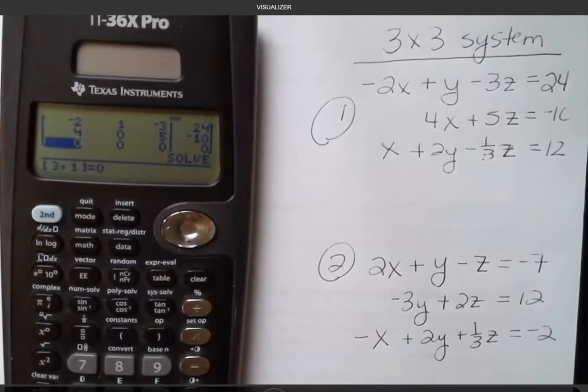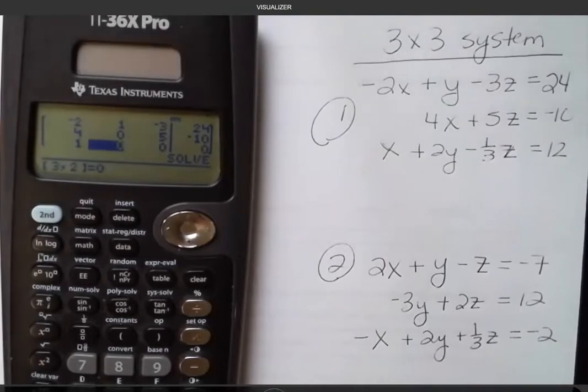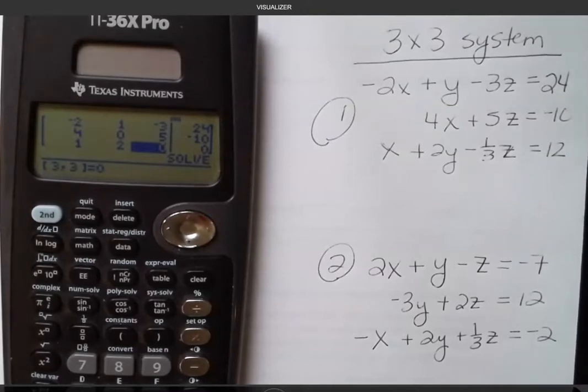And finally we have 1 for the x. We don't see a value there - our coefficient is 1. We're just entering coefficients here, so it kind of makes it nice. And then our z was negative 1/3. We always want to make sure that we're entering that negative if there is one. And so I'm going to enter that as negative 1/3, and then that equals 12.